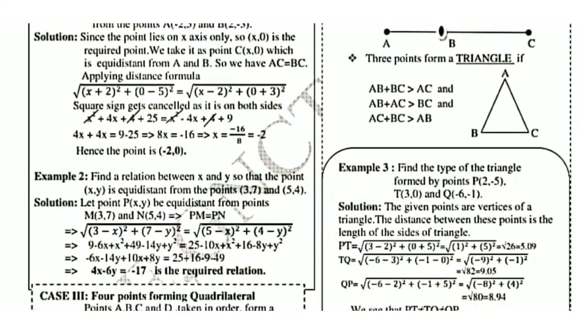Example 2: Find a relation between x and y so that the point P(x, y) is equidistant from the points M(3, 7) and N(5, 4). Since P is equidistant from M and N, PM equals PN. Applying the distance formula, the required relation between x and y comes out to be 4x minus 6y equals −17.